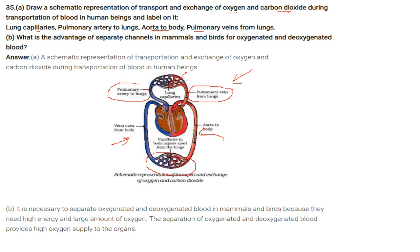What is the advantage of separate channels in mammals and birds for oxygenated and deoxygenated blood? It is necessary to separate the two types of blood because mammals and birds need high energy and a large amount of oxygen. This separation provides a high oxygen supply to the organs.